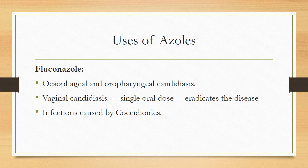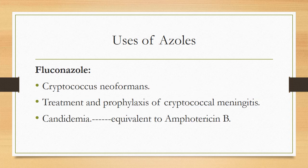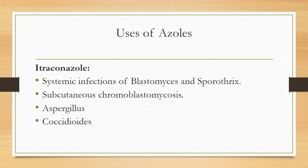Clinical uses of fluconazole: it is the drug of choice for esophageal and oropharyngeal candidiasis, and effective against vaginal candidiasis — a single oral dose is usually effective. It is the drug of choice for coccidioides infections, and helpful in treatment and prophylaxis of cryptococcal meningitis due to its high CNS penetration. Its efficacy against candidemia is almost equivalent to amphotericin B.